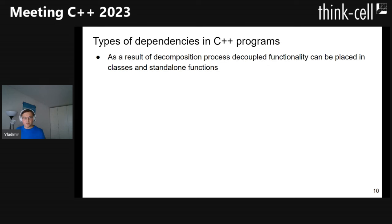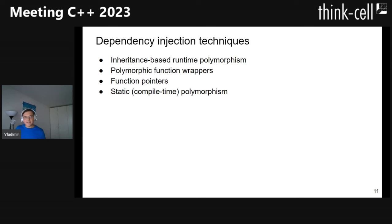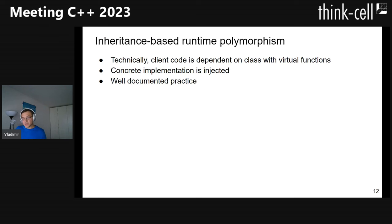Dependency injection techniques available at the language level in C++ are: inheritance-based runtime polymorphism, polymorphic function wrappers, function pointers inherited from C, and static or compile-time polymorphism. Let's start with inheritance-based runtime polymorphism.